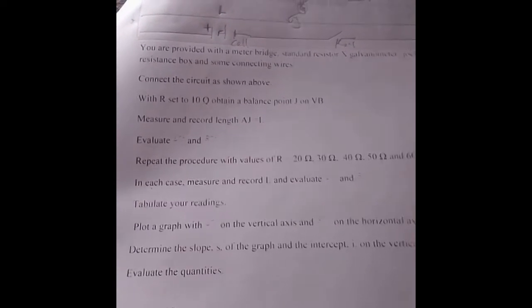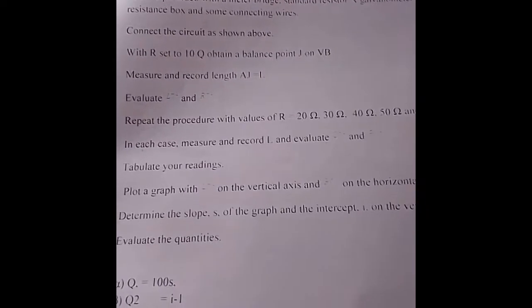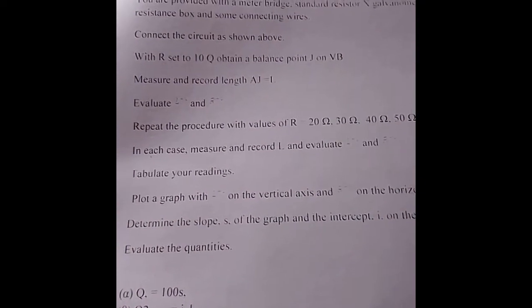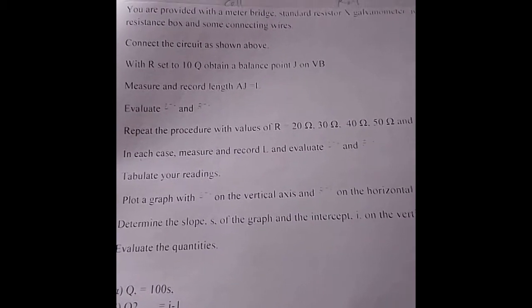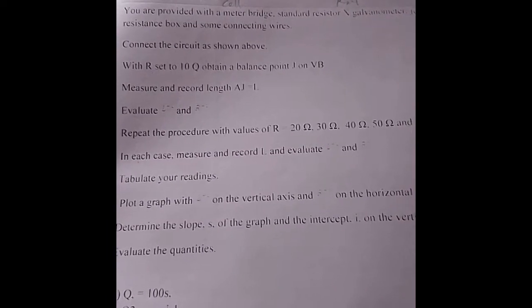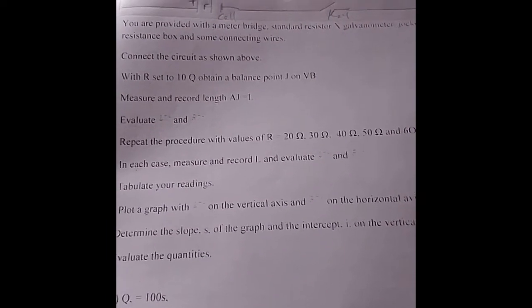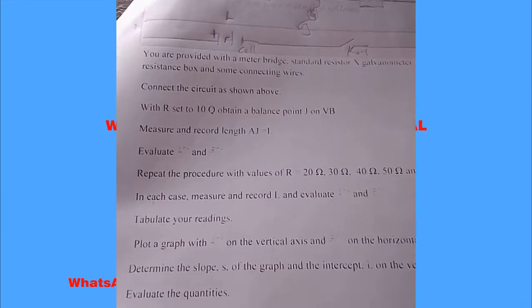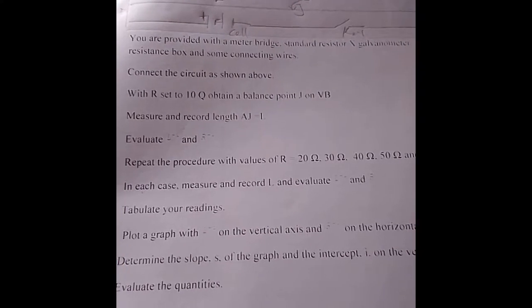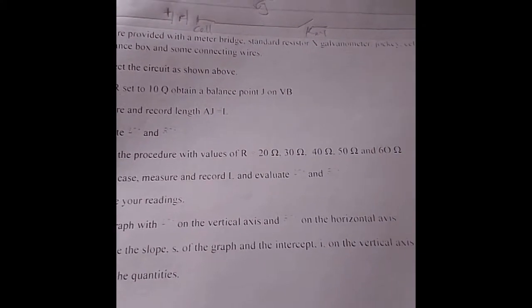Deduct some values that are required of you so that you won't make any mistake. The first thing to observe is our R, that is our resistance, to be set to 10 ohms and obtain balance point J on the meter bridge, followed by the repeated procedures of 20, 30, 40, 50 and 60 ohms respectively.